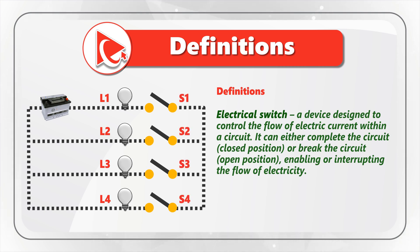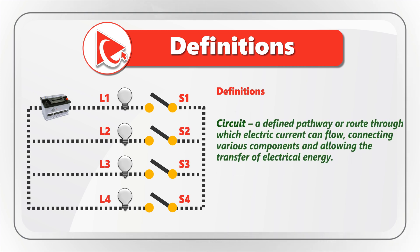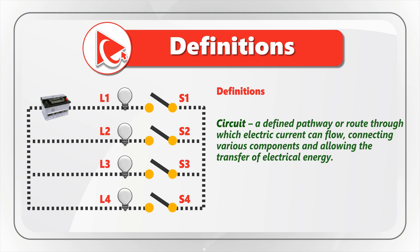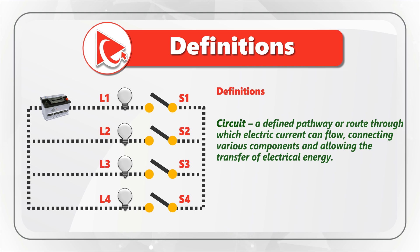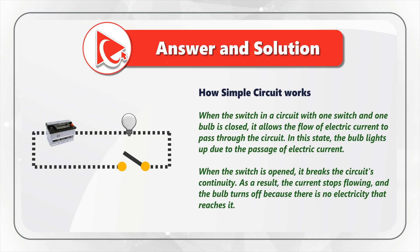The last concept we're dealing with here is the concept of a circuit. A circuit is a defined pathway or route through which electric current can flow, connecting various components and allowing the transfer of electrical energy. Our circuit consists of one battery, four light bulbs, four switches, and all the conductors that connect these devices. To better understand how to answer this question, let's understand how a simple circuit works.